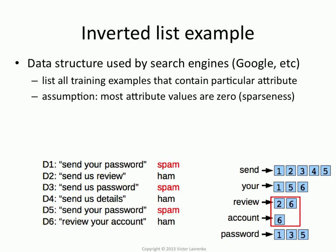For example, the word 'review' — the attribute review — occurs in D2 and in D6. So you would list D2 and D6, which tells you which training instances contain that attribute.